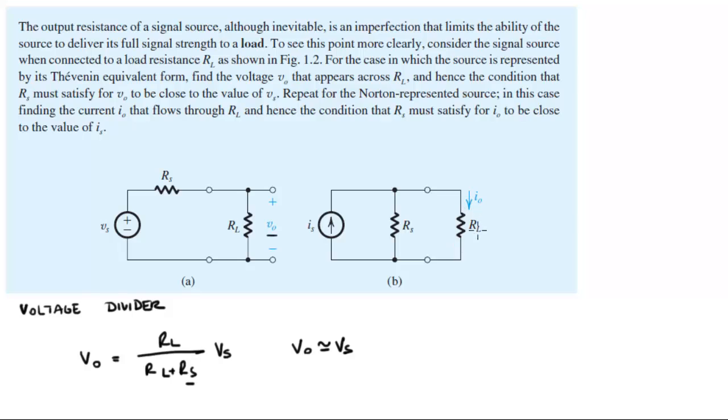Now to find the current going through RL on this Norton represented source, on the second one, on part B, this is the Thevenin, this is Norton, you have to do a current divider.